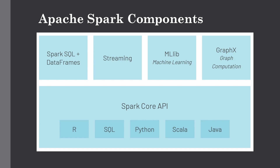Another component is GraphX, which is used for graph computation. For example, with social media data you have profiles of different people around the globe, and to find relationships between two people you need graph computation. Apache Spark's GraphX API is a graph computation engine built on top of the Spark Core API for processing graph data at scale. These are the basic components of Apache Spark that serve a wide array of applications.